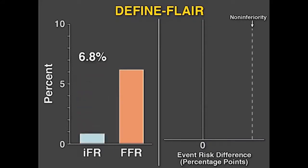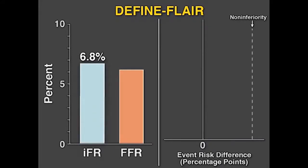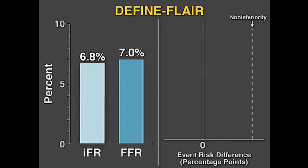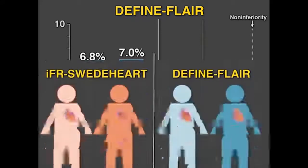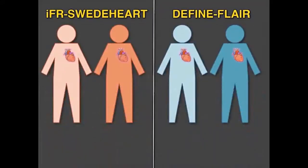In the Define Flair Study, the primary endpoint occurred in 6.8% of the IFR group and 7.0% of the FFR group, and the 95% confidence interval for the risk difference fell within the pre-specified non-inferiority margin of 3.4%.